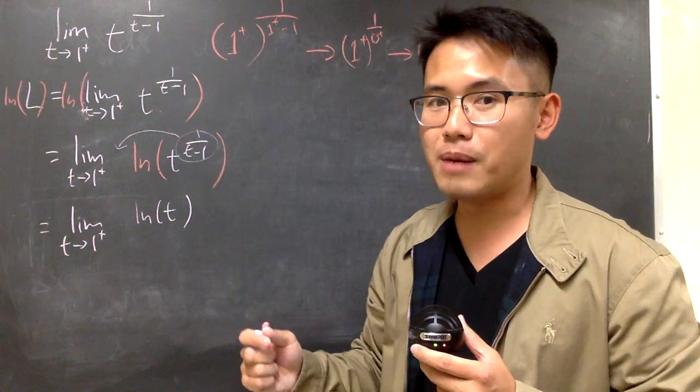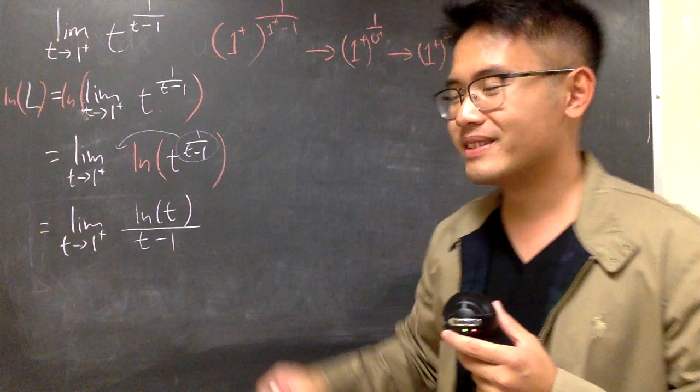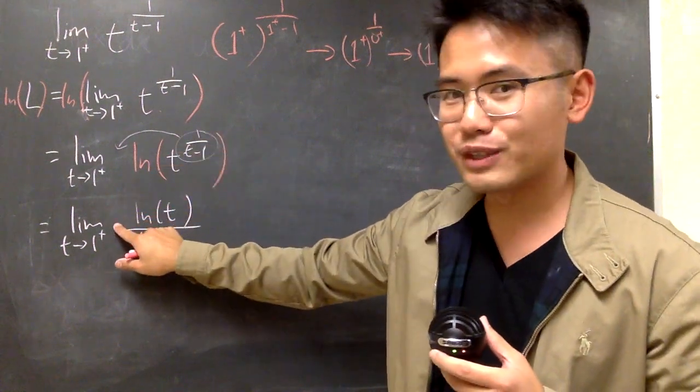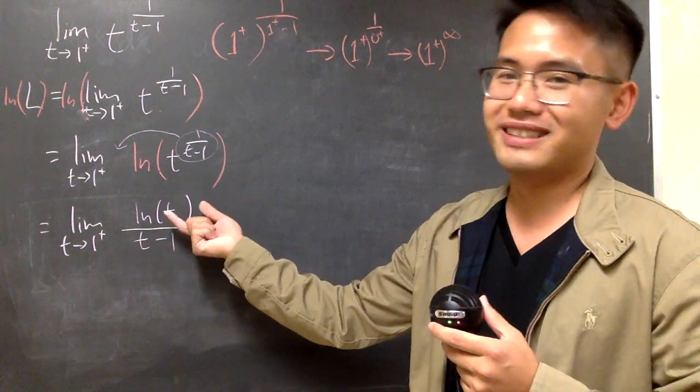So let me write it down as over t minus 1, like this. 1 over t minus 1, put the t minus 1 in the denominator, 1 times ln of t instead of ln of t, like this.